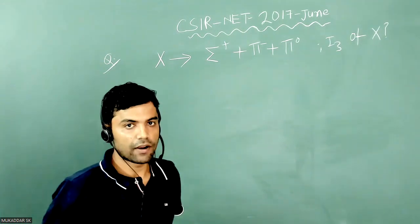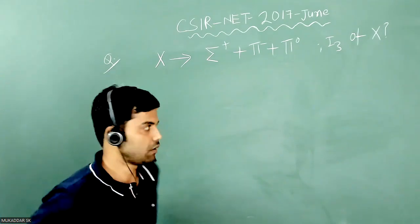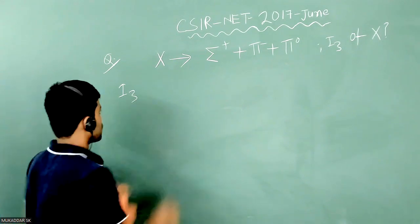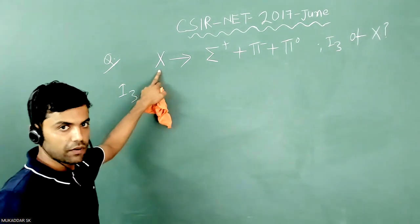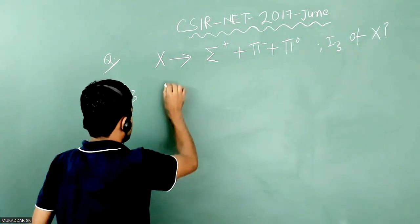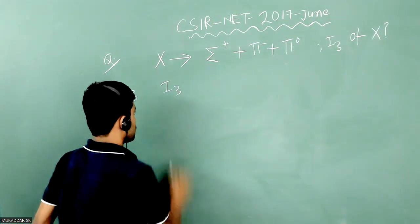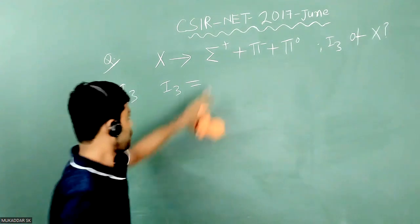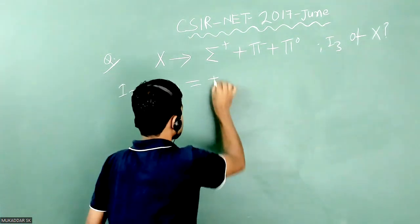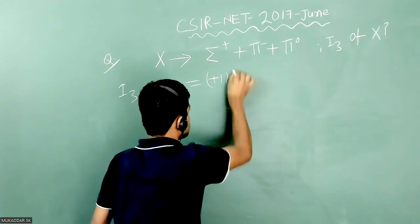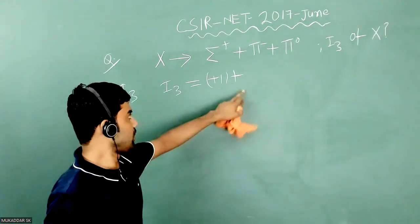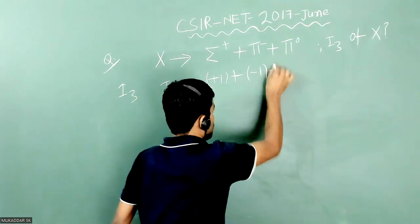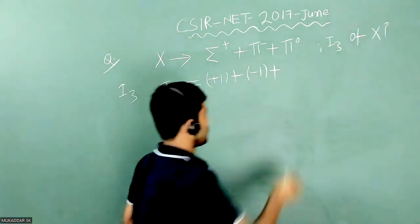We don't know the i3 of X particle. Let us assume it is simply i3. This will be equal to the i3 of sigma plus, which is plus one, plus i3 of pi minus, which is minus one, and i3 of pi zero, which is zero.